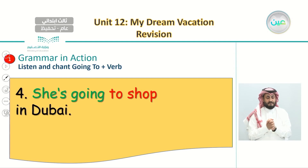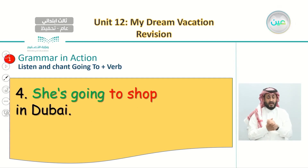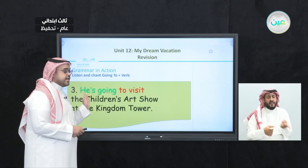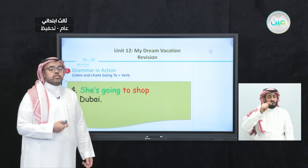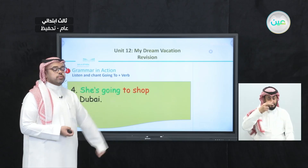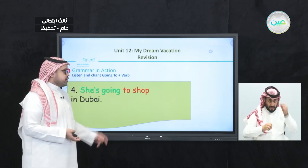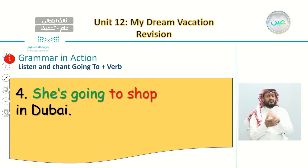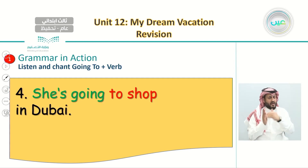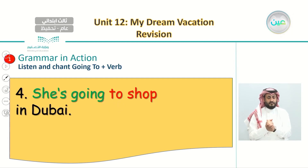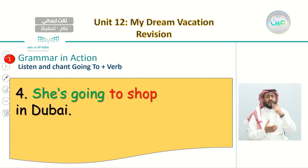The fourth sentence introduces another subject pronoun: 'she is.' We say: She is going to shop in Dubai. We use 'going to' to talk about her plans — the things she wants to do when she goes to Dubai. After 'going to' we use a regular verb; here the verb is 'shop.' She is going to shop in Dubai and buy different things.